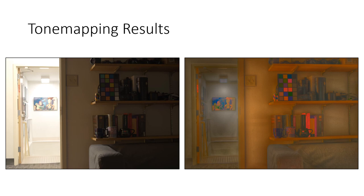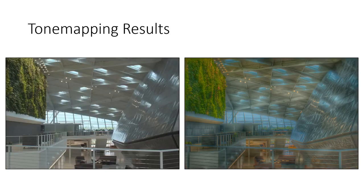Moving on to results: on the left you can see a typical result of the homework 2 tone mapping process in the primal domain, and on the right my results using gradient domain image processing. You can see that while the colors are a mess — and we'll talk about that — it's actually a lot easier to see detail in both the right and left sides of the image due to the much more aggressive equalization of brightness. In the intensity domain all the colors make sense, but you can't see much of the background because the sky is simply too bright. On the right, everything is still in detail, even if it looks more like a dreamscape than a real image.